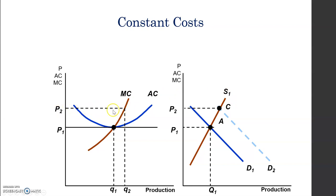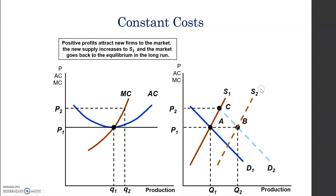At price P2, since the firm is a price taker, there will be positive profits because average revenues exceed average cost at this point. We know that positive profits attract more companies to the market, so new firms enter and the supply shifts to the right.